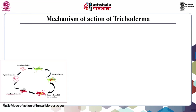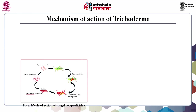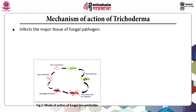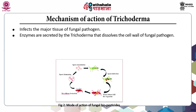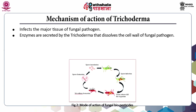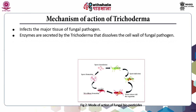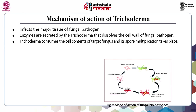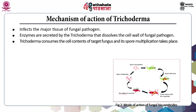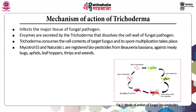The mechanism of action of Trichoderma: it infects the major tissues of the fungal pathogen. Enzymes are secreted by Trichoderma that dissolve the cell wall of the fungal pathogen. Trichoderma then consumes the cell contents of the target fungus and its spore multiplication takes place. Mycotrol ES and Naturalis L are registered biopesticides derived from Beauveria bassiana, used against mealybugs, leafhoppers, thrips and weevils.